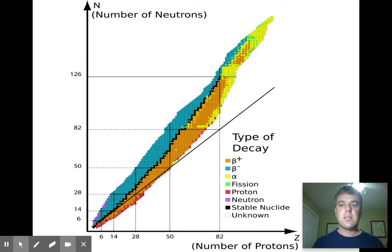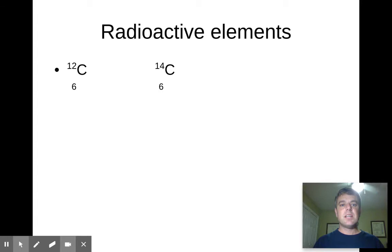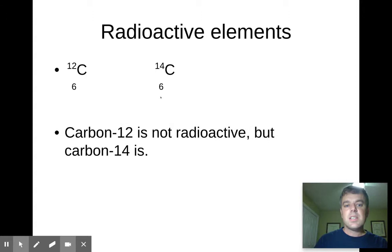You might be familiar with carbon-12 and carbon-14. If you'll remember, the top number is the mass, protons plus neutrons. The bottom number is just protons. So carbon-12 has 6 protons and 12 minus 6, 6 neutrons, and carbon-14 has 6 protons and 14 minus 6, or 8 neutrons. Carbon-14 is radioactive. Carbon-12 is not radioactive. Carbon-14 is what's used in radiocarbon dating.